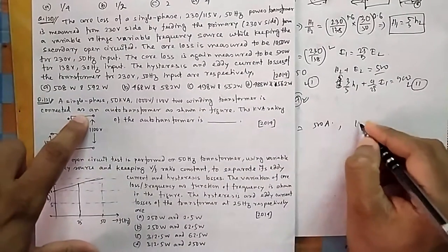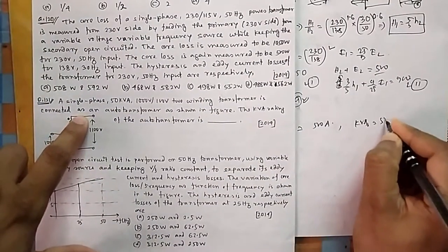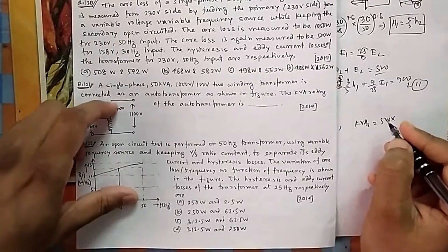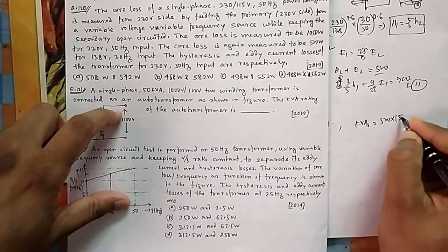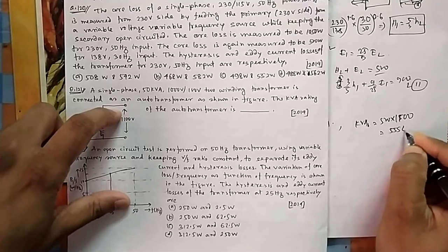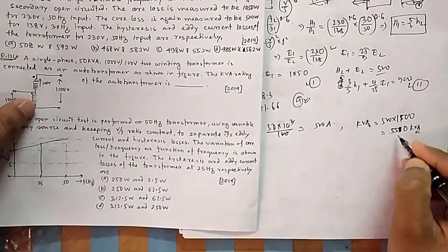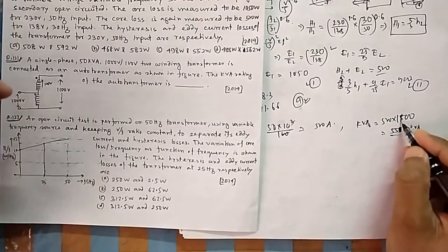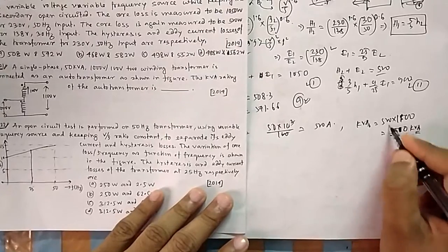So what will be this kVA rating? Maximum kVA rating - voltage is 1100 and current is 500. kVA max will be equal to 500 times 1100, so it will be 550 kVA. So that is your answer.